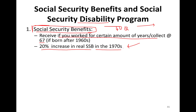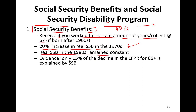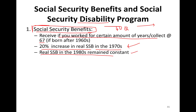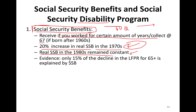Real purchasing power went up by 20% in the 1970s. Real Social Security benefits in the 1980s remained constant — basically just catching up with the rate of inflation, whereas the 1970s increase was better than inflation. Empirical evidence shows that only 15% of the decline in labor force participation rate for elderly Americans is explained by Social Security benefits.